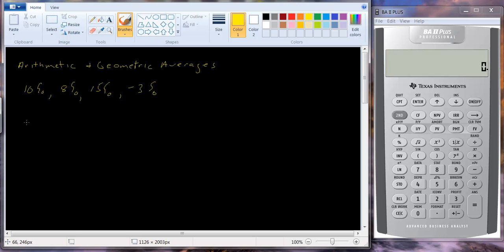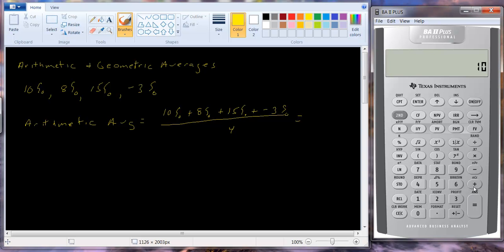So the arithmetic average here is the following. 10% plus 8% plus 15% plus negative 3%, all divided by 4. Pretty straightforward. You've done this many times in your life.